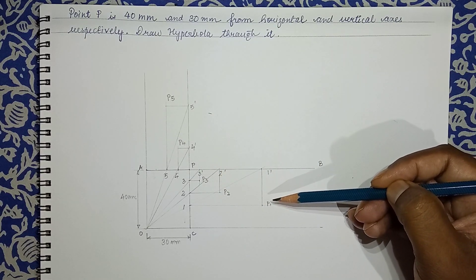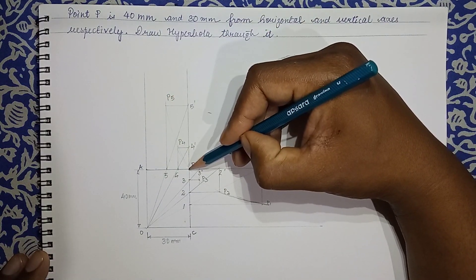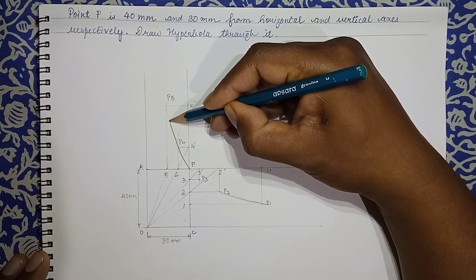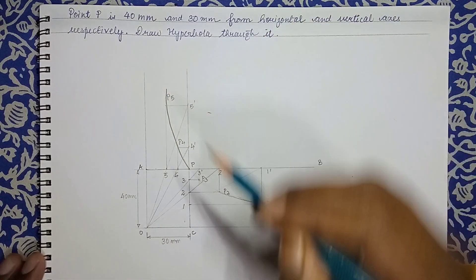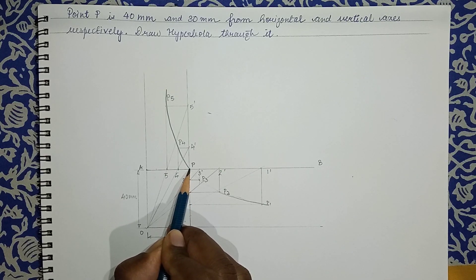So we have this position P1, P2, P3, P4, and P5. When you connect all these points, you get a curve and it is hyperbolic in nature. With the help of French curve, we can connect the points, or with the help of freehand also we can draw the curve.